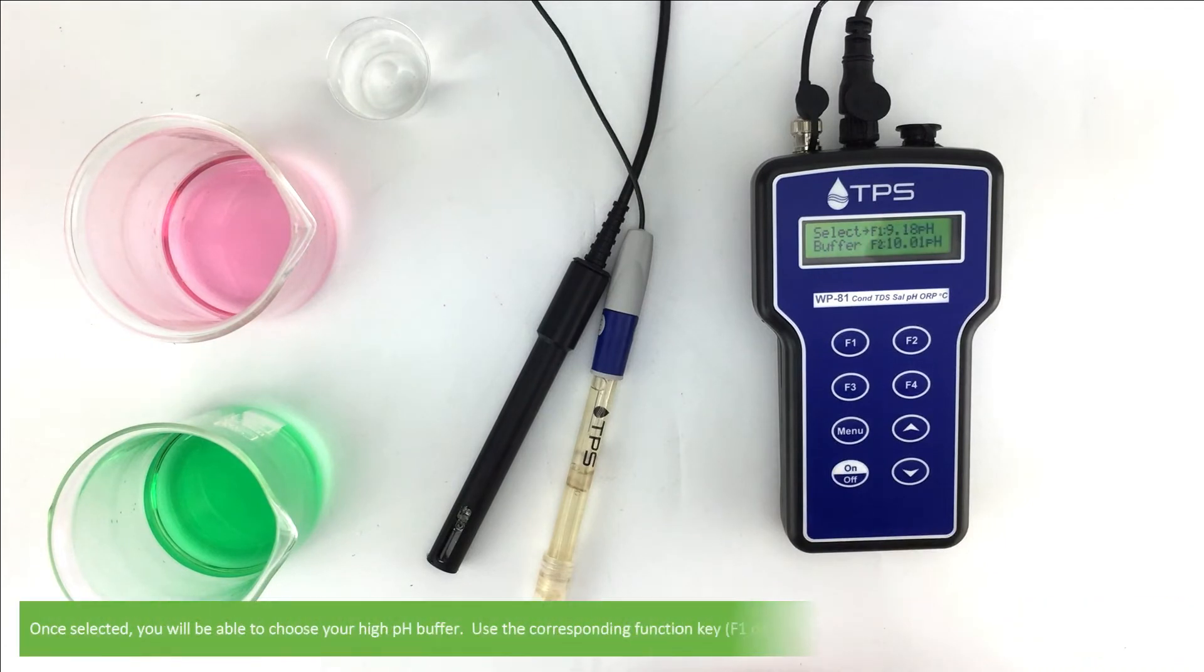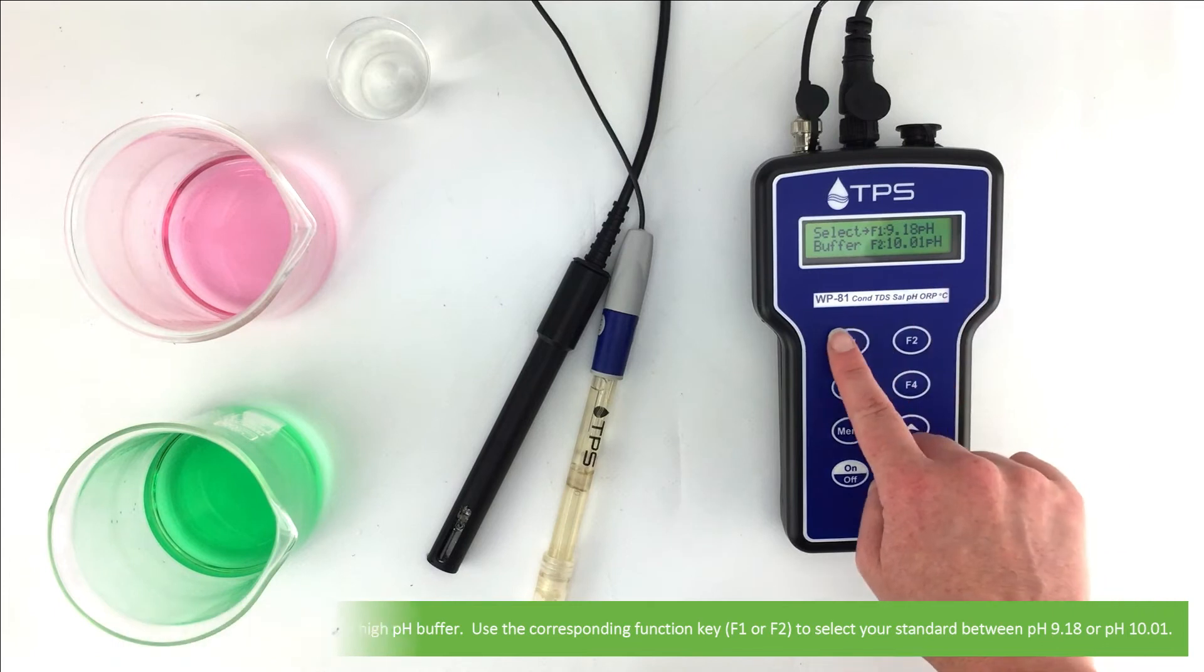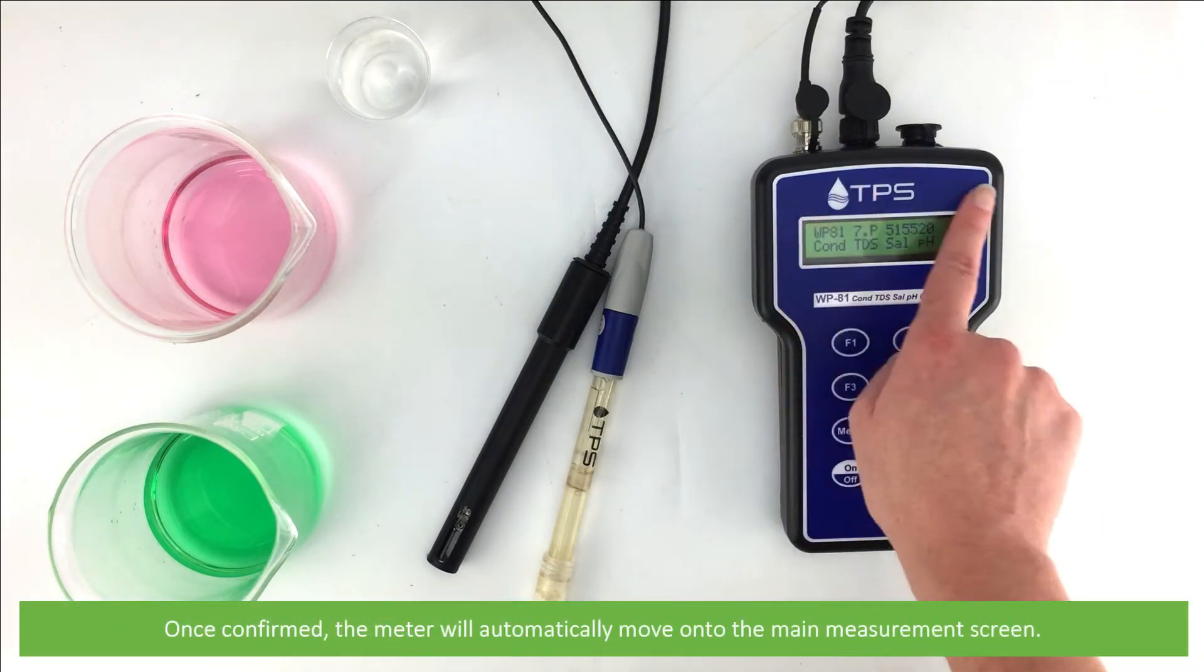Once selected, you will be able to choose your high pH buffer. Use the corresponding function key, either F1 or F2, to select your standard between 9.18 or pH 10.01. Once confirmed, the meter will automatically move on to the main measurement screen.